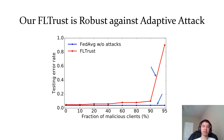One curve corresponds to FedAverage under no attack, and the other corresponds to FLTrust under the adaptive attack. As we can see, FLTrust under attacks and FedAverage under no attack achieve similar testing error rates when up to 90 percent of the clients are malicious.